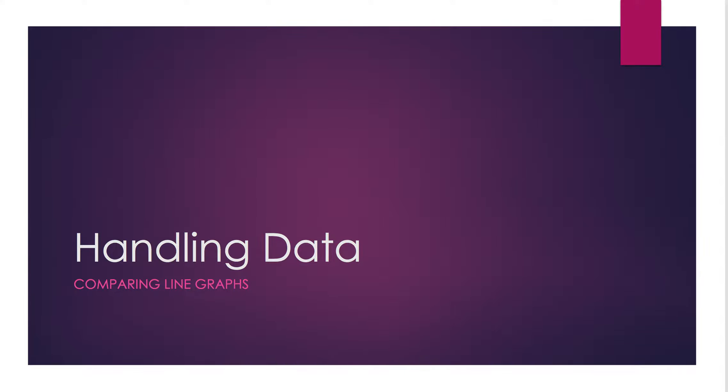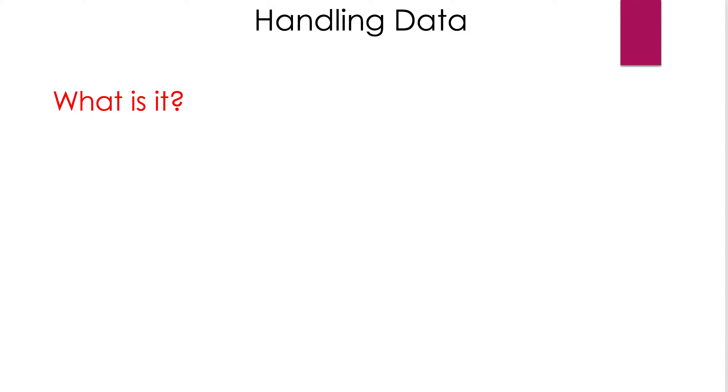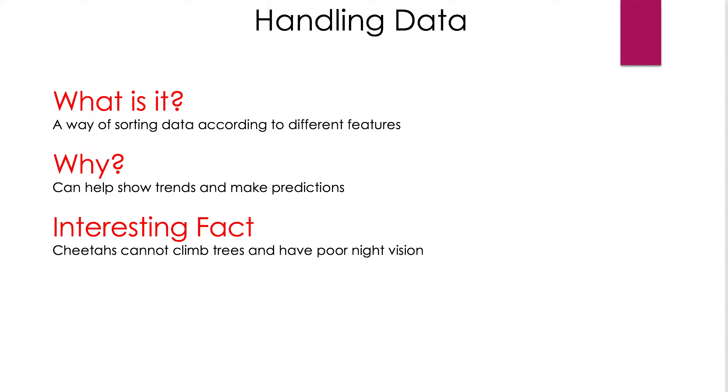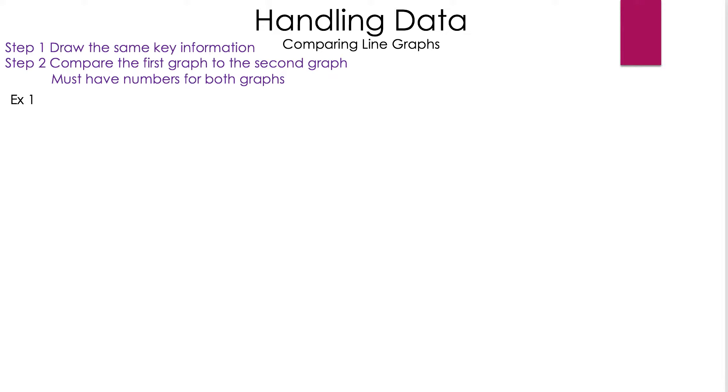Handling data: comparing line graphs. What is it? A way of sorting data according to different features. Why? It can help show trends and make predictions. Interesting fact: cheetahs cannot climb trees and have poor night vision. So let's take a look at the steps on how to do this.